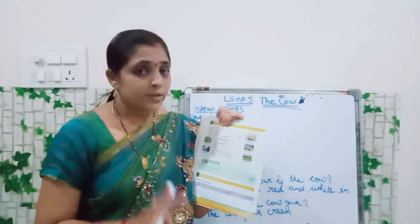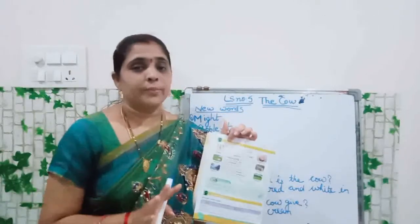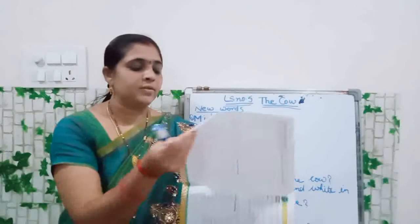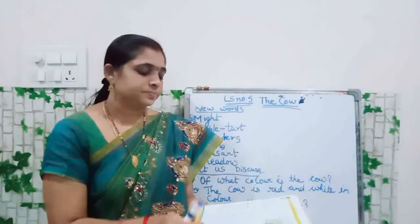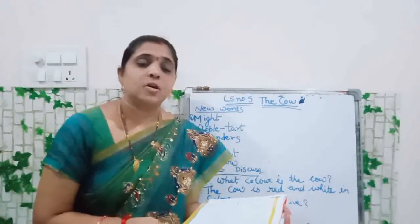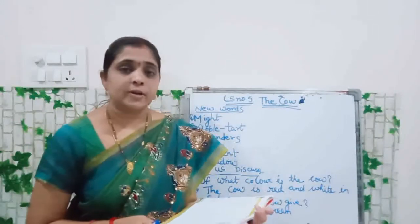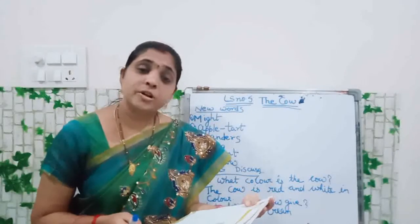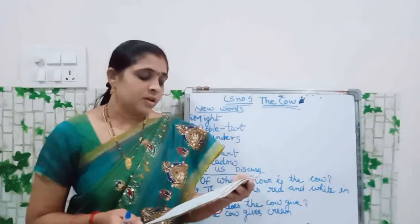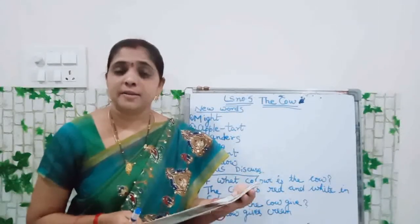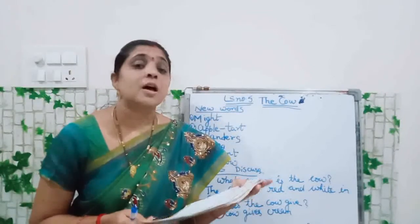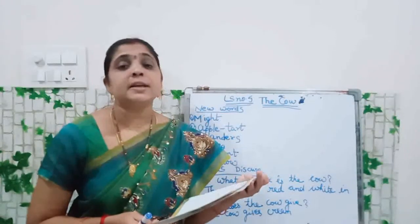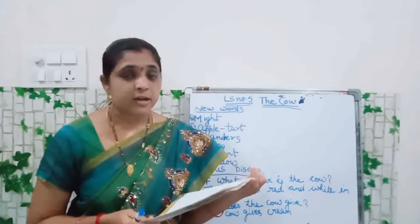Is it clear? Now all of you see page number 27. Have you all taken out page number 27, children? Might — see there, word meanings. Might means what? Strength. S-T-R-E-N-G-T-H. Strength.